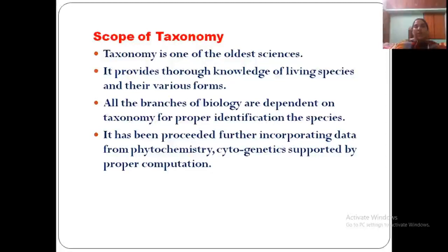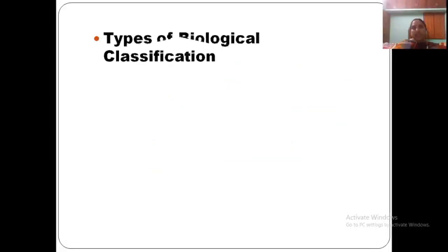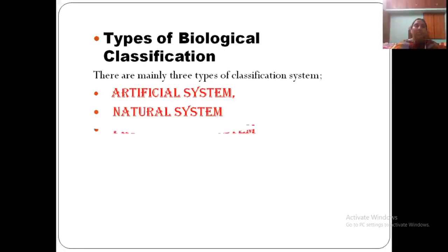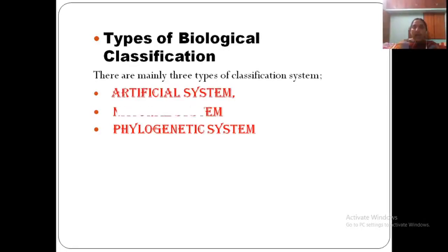Now, what are the different types of biological classification? There are three main systems: the artificial system, the natural system, and the phylogenetic system. These are the three types of biological classification.